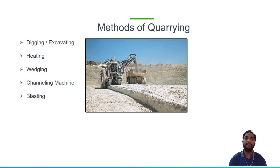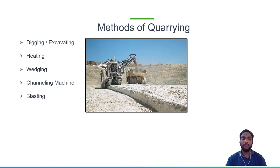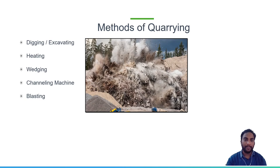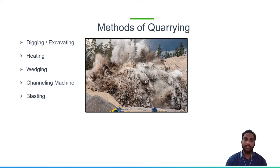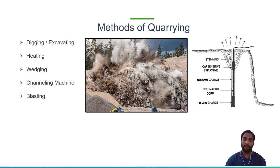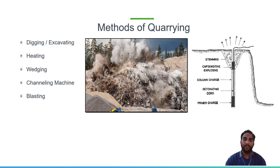Fourth is the channeling machine — an automatically operated machine useful for soft rock, allowing excavated rock to be easily transported. Fifth is blasting, which has two types: sequential blasting and continuous blasting. Continuous blasting is when all detonators are blasted at the same time. Sequential blasting is when there is a time difference of 1/30th or 1/40th of a second between two successive holes of charge. Sequential blasting gives better output than continuous blasting.